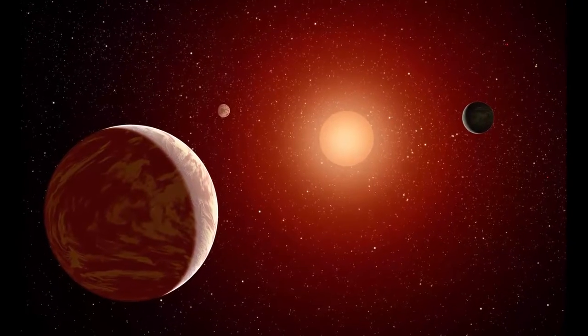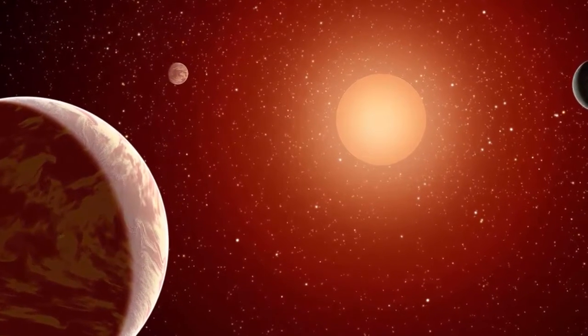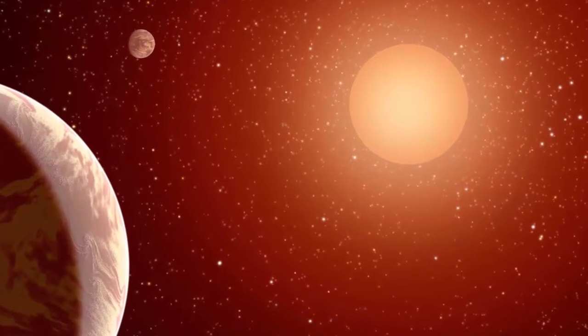Scientists have discovered the tiniest star known to science. It's so small that it barely qualifies as a star. Referred to as EBLM J0555-57 AB, it's only slightly larger than Saturn. The star is a component of a binary star system, orbiting a far larger star about 600 light years from Earth.